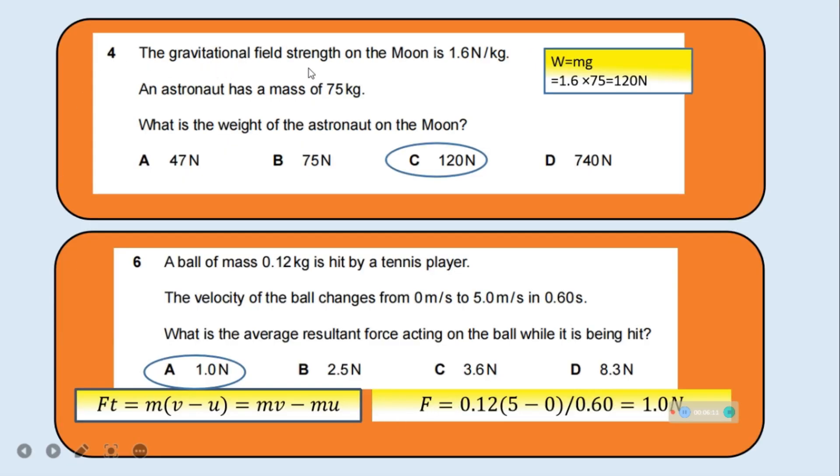The gravitational field strength on the moon is 1.6 Newton per kilogram. An astronaut has a mass of 75 kilogram. What is the weight of the astronaut on the moon? We know W the weight is equal to mg. Mass is 75 kilogram and g the gravitational field strength is 1.6. So 1.6 multiplied by 75 equals 120 Newton. Option C is the correct one.